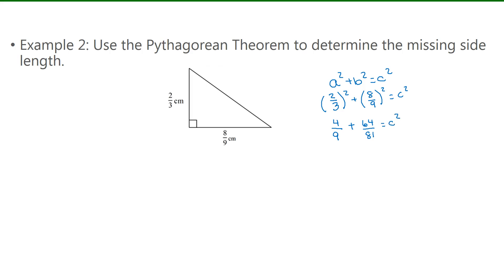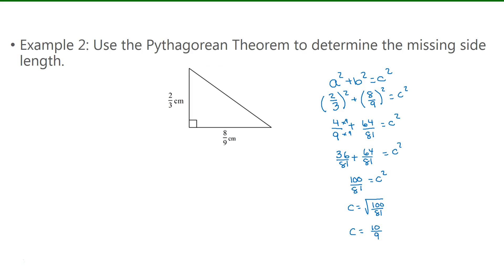Now when we have fractions, we need to find a common denominator. Between 9 and 81, that could be 81. So the second fraction doesn't change, but the first fraction needs to be multiplied by 9. This makes it 36 over 81 plus 64 over 81. Adding that together gives us 100 over 81. Now we need to find the square root of 100 over 81. The square root of 100 is 10, and the square root of 81 is 9. So the missing side length is 10 over 9 centimeters.